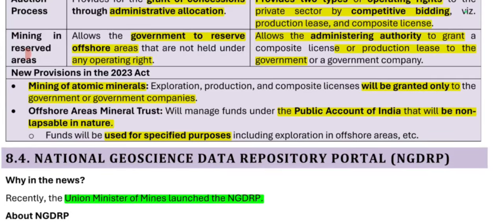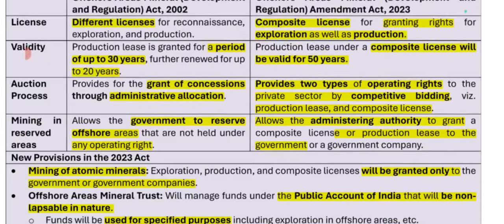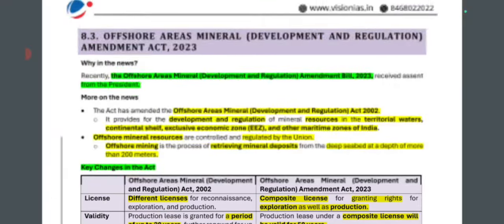New provisions in the 2023 Act include that mining of atomic minerals — production and exploration — is only for government companies in offshore areas. Regarding the mineral trust, it will be managed in the public account of India as a non-lapsable fund, meaning if unused this year, it carries forward to next year. The fund will be used for specified purposes like exploration in offshore areas.